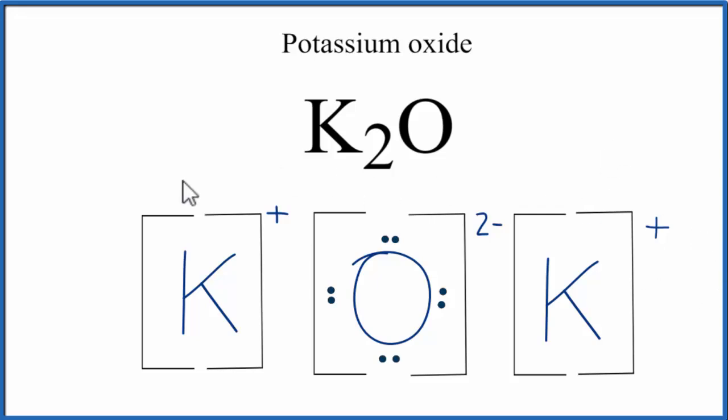Do note that this is what's called a formula unit. Potassium oxide, that's normally a crystal. And in that crystal, we have a bunch of these formula units in a repeating pattern.